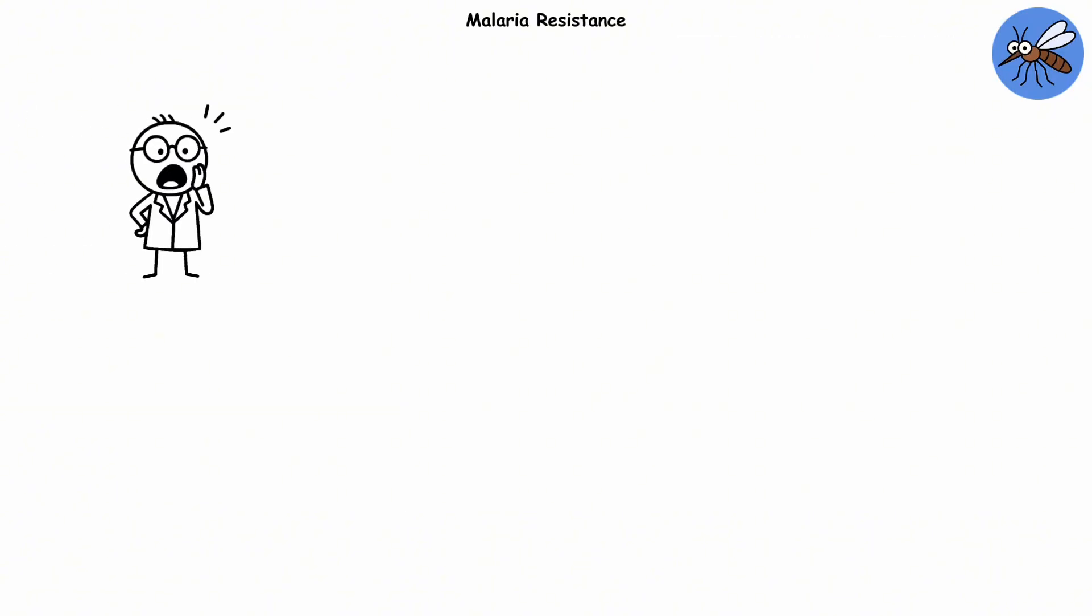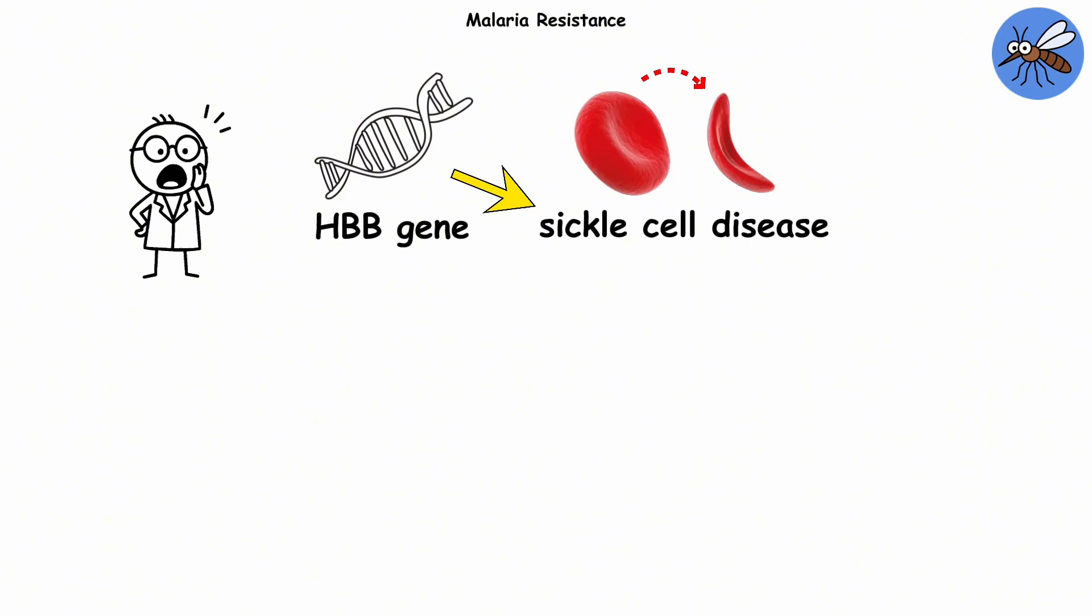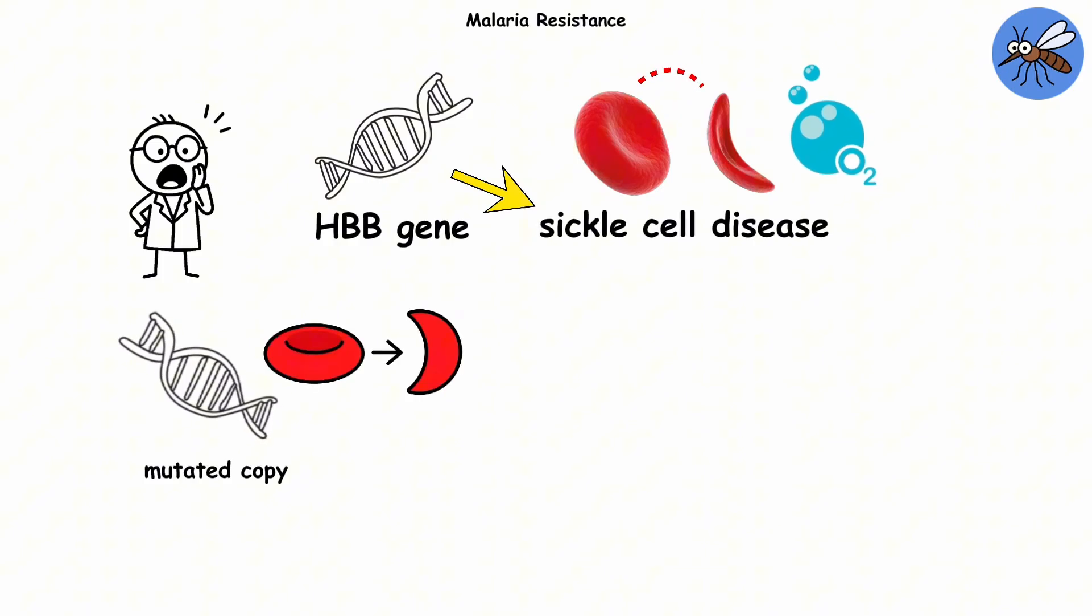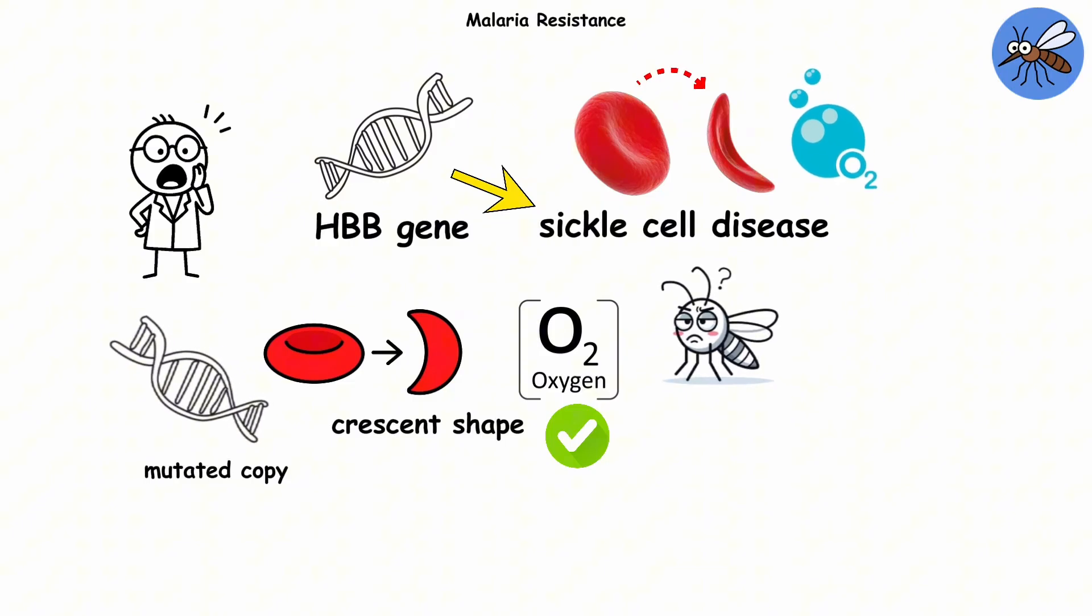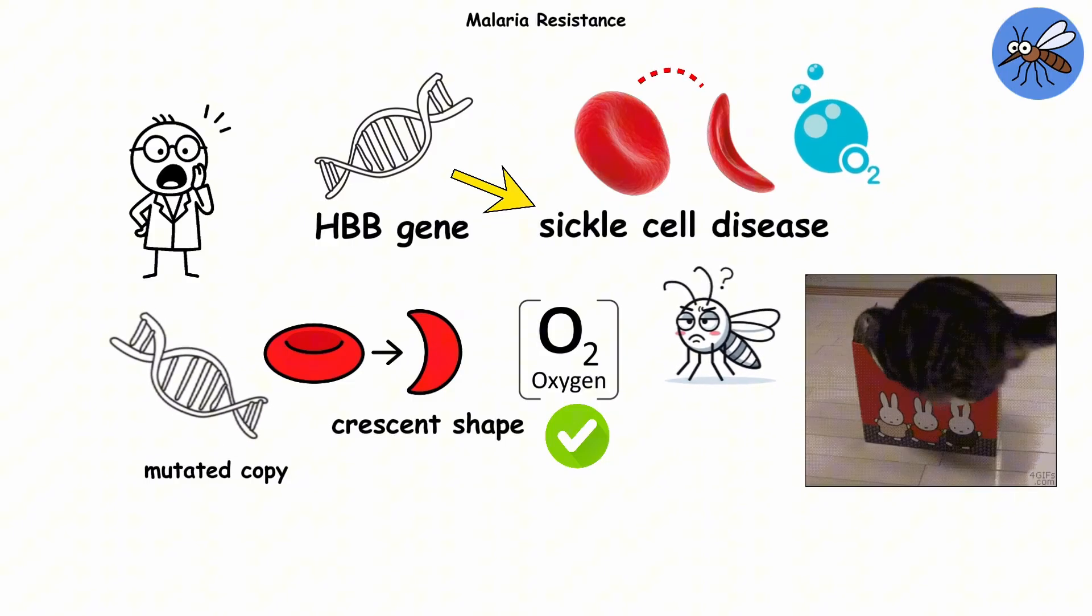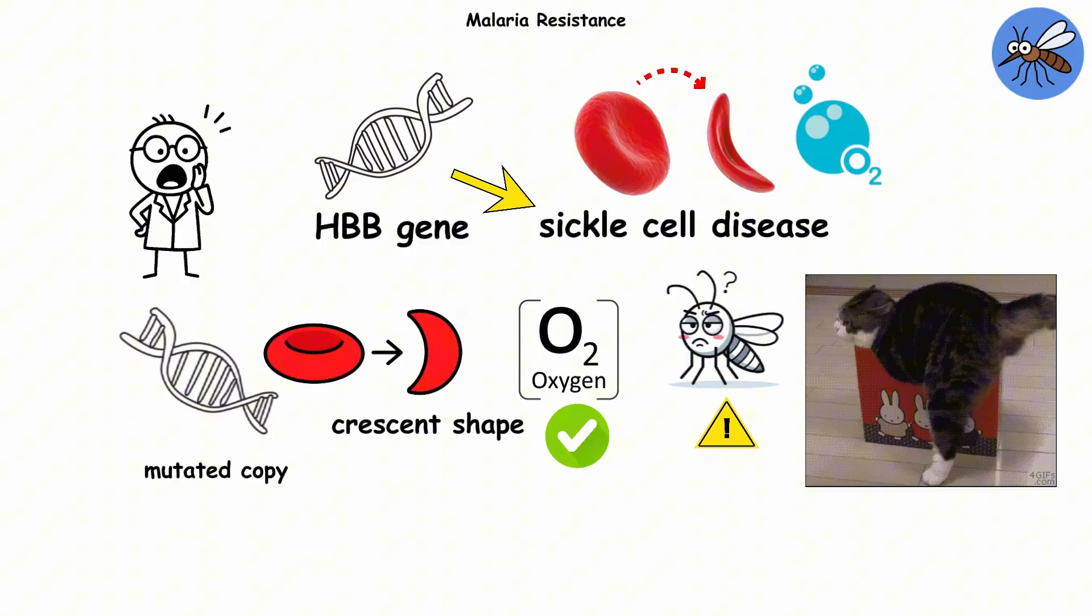Here's the twist. The beta-globin gene, which is responsible for sickle cell disease, changes the shape of red blood cells, the tiny discs that carry oxygen. If you inherit one mutated copy of the gene, your cells bend slightly into a crescent shape. They still deliver oxygen just fine, but malaria parasites hate that shape. It's like trying to fit into a sleeping bag that's the wrong size. They can't survive inside.